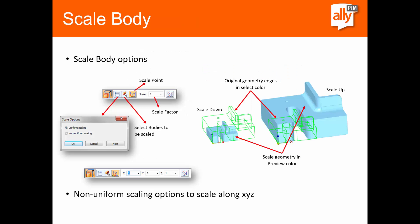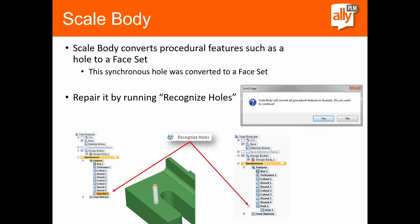Going over some of the options on the command bar, we can do uniform or non-uniform scaling. We have the scale point option to select from what point we want to scale to and from, and also our scale factor. Now the scale body command is going to convert procedural features like holes to a face set. But then what we can do is simply run the recognize holes command and convert that face set into an actual hole — really easy to get that back into an actual feature.